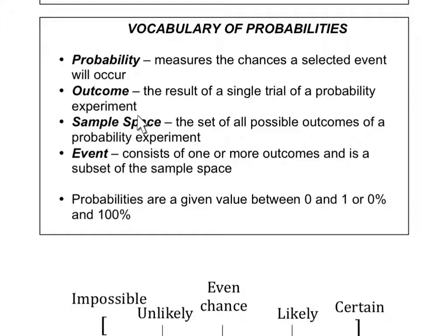The sample space is the set of all possible outcomes of a probability experiment — all the possible ways that something could occur. For example, if you were to roll a 12-sided die, you could get a 1 through 12; that would be the sample space. An event consists of one or more outcomes and is a subset of the sample space.